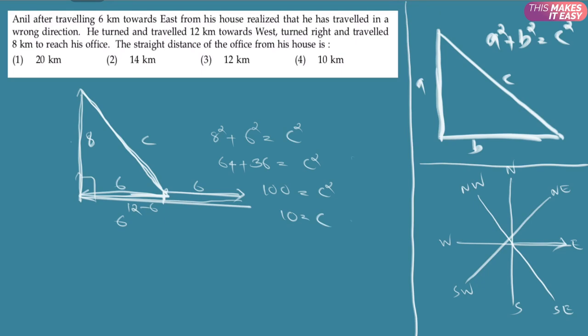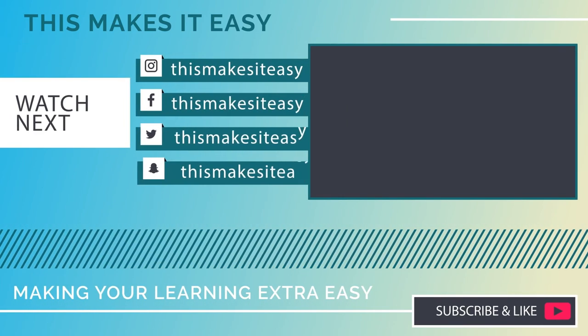After analyzing three different questions, you now have a clear method to solve direction and distance problems. First, visualize and draw the picture. Then complete the diagram using rectangles and triangles. Finally, apply the Pythagoras theorem. That's it.